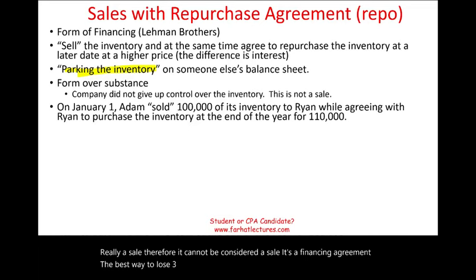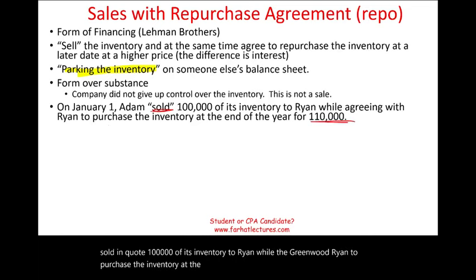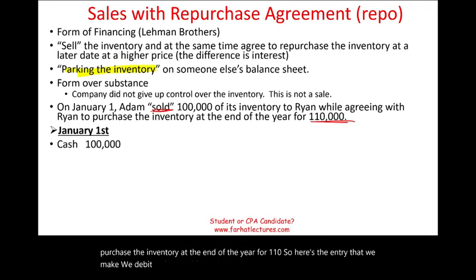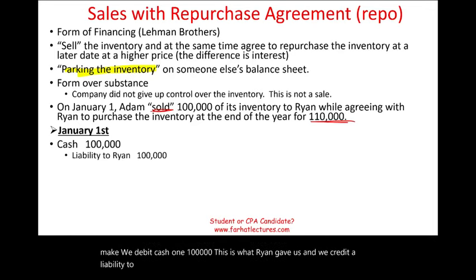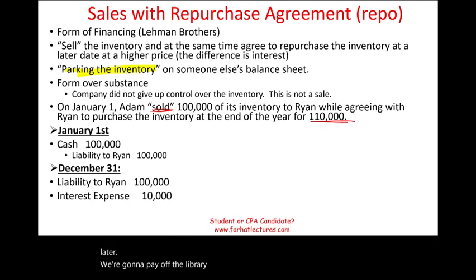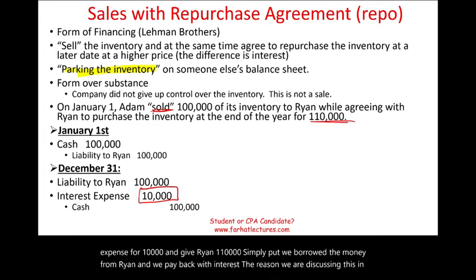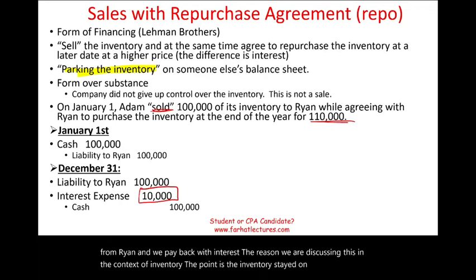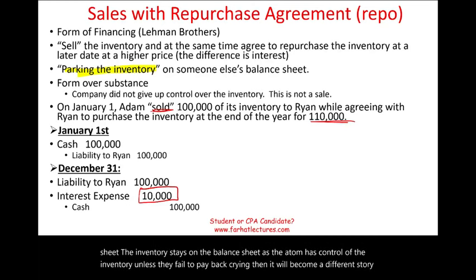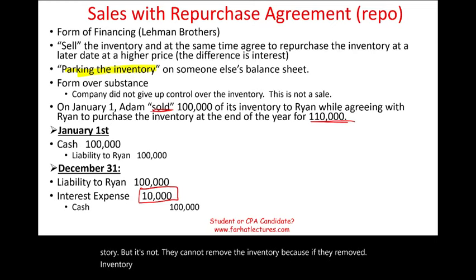The best way to illustrate this is with an example. January 1st, Adam Company sold $100,000 of its inventory to Ryan while agreeing to purchase the inventory back at the end of the year for $110,000. The entry: debit cash $100,000, credit liability to Ryan $100,000 — we don't credit sales because we're going to buy it back. On December 31st, we debit the liability, debit interest expense for $10,000, and credit cash $110,000. Simply put, we borrowed money from Ryan and paid it back with interest. The inventory stays on Adam's balance sheet as Adam has control of the inventory.